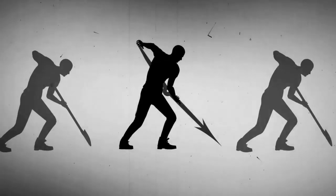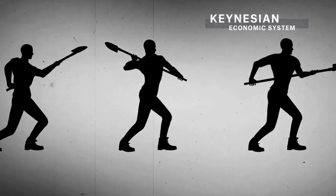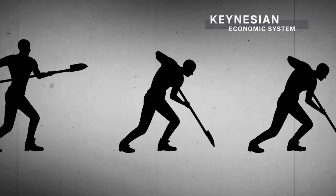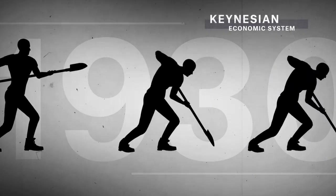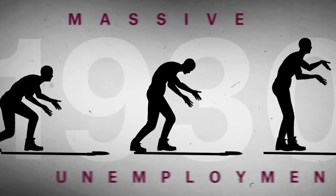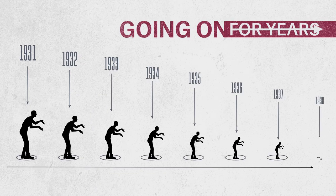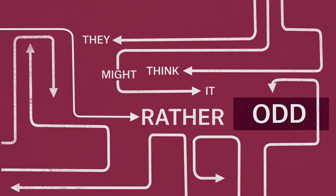And similarly, the Keynesian economic system — why did it come about in the 1930s? Unless someone knows there was massive unemployment going on for years at that time, they might think it rather odd.